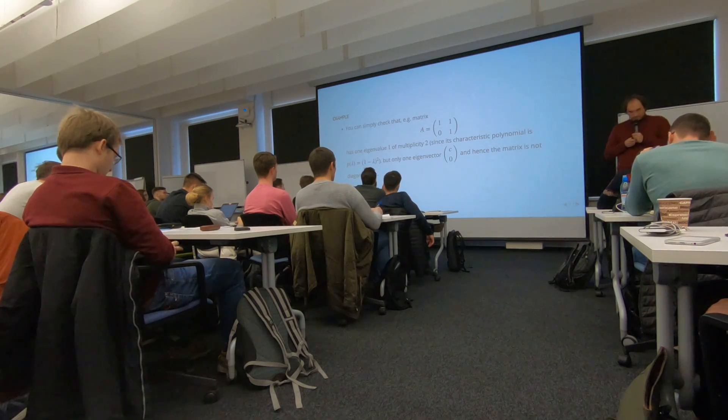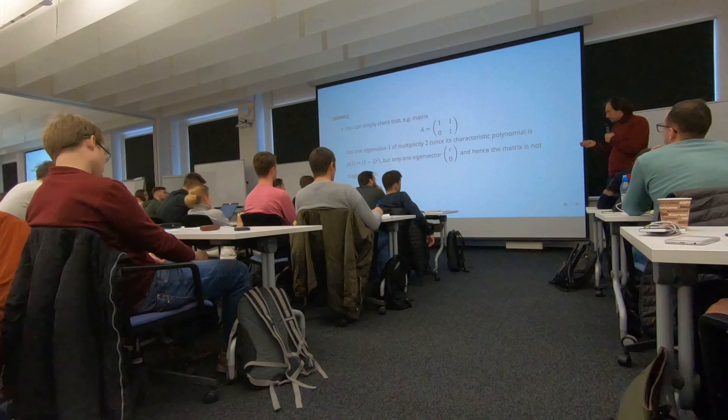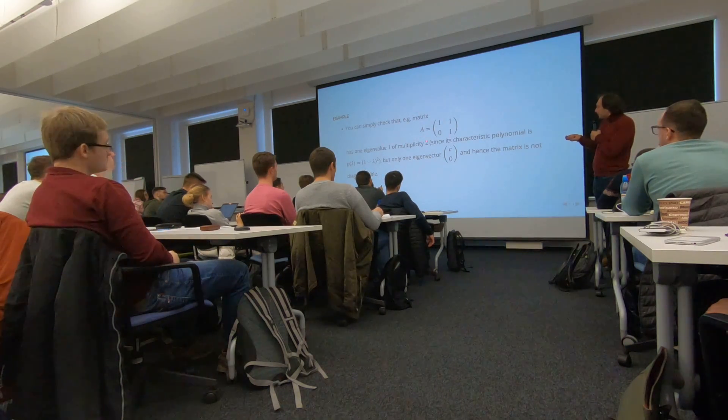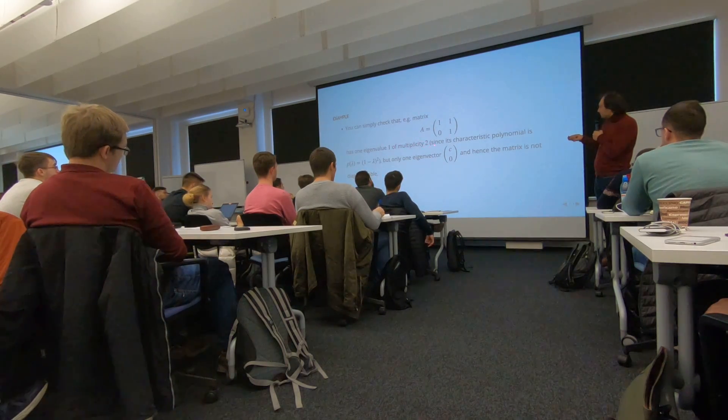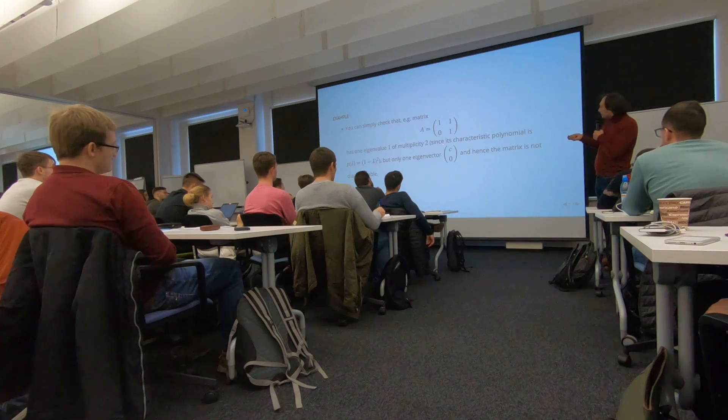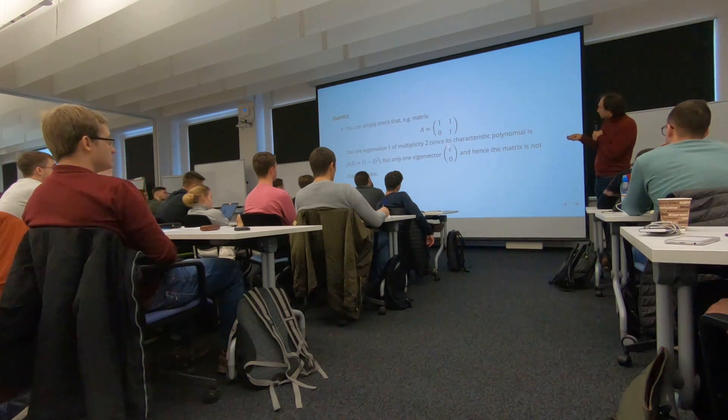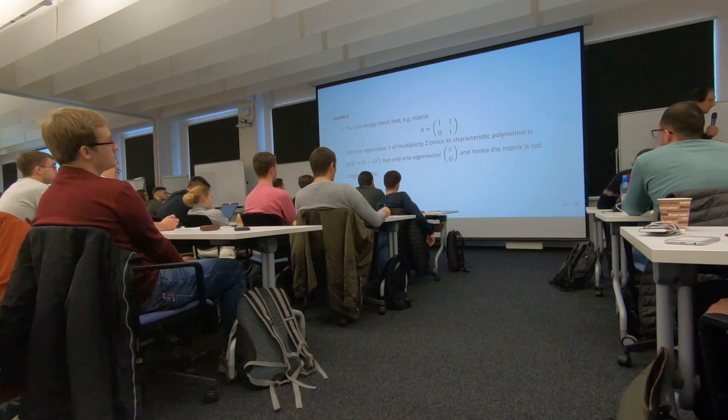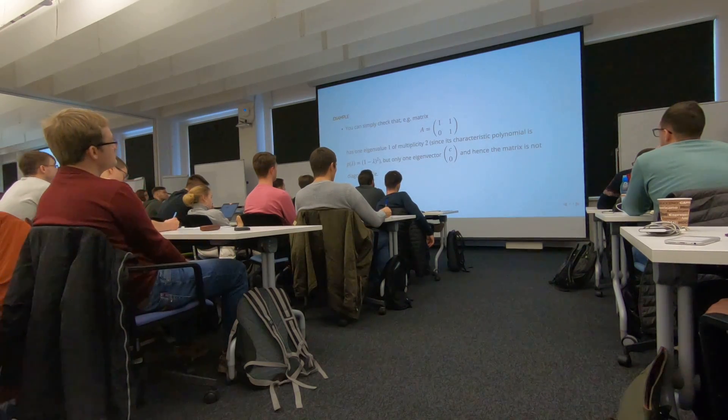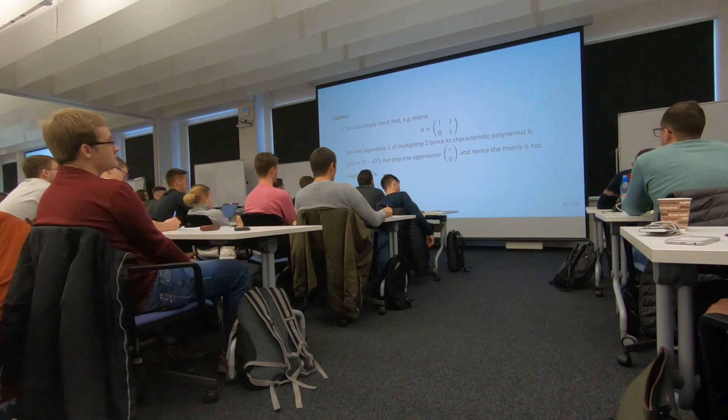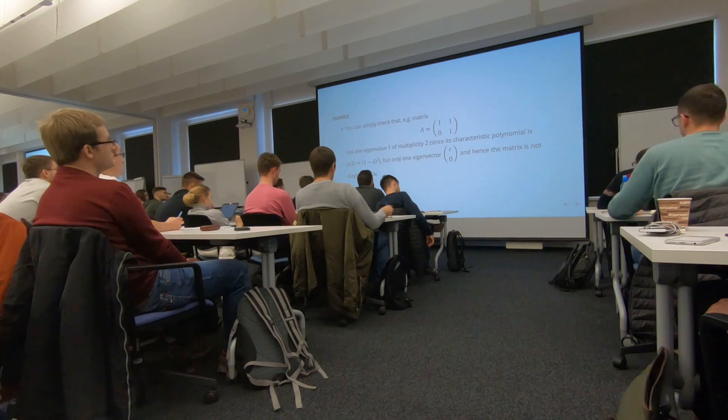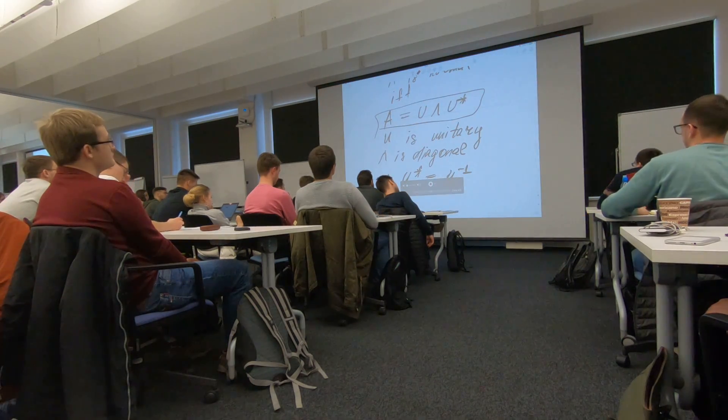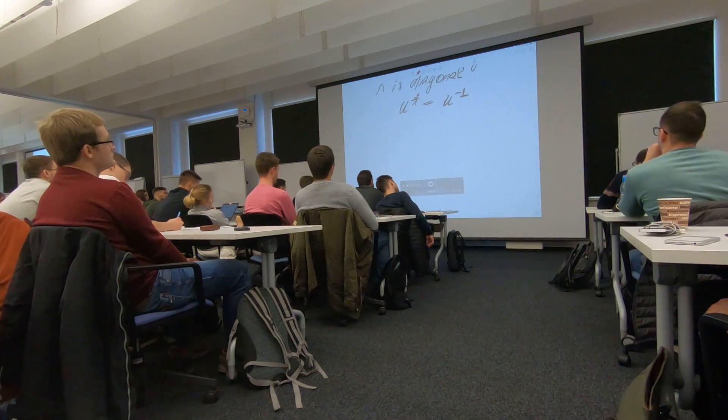This is, yeah, it has to be proven, but it's a very simple fact. So we have eigenvalues one of multiplicity two, but only one eigenvector, which is the first column of the identity matrix. And this matrix is non-diagonalizable, and that's why in the Jordan form, in the Jordan form, the matrix is reduced not to the diagonal form, but to the Jordan form.